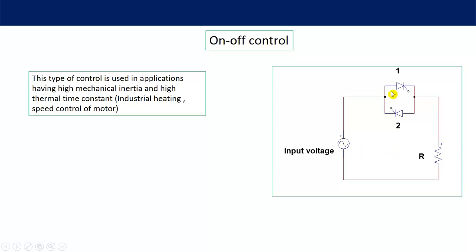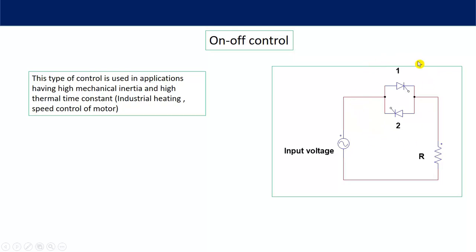Thyristor number 1 is triggered at 0 degrees, giving a complete positive half-cycle, and thyristor number 2 is triggered at 180 degrees, giving a complete negative half-cycle. So at 0°, 180°, 0°, 180° — a number of complete cycles are allowed to appear across the resistance. Then, as per requirement, the firing pulses are removed so that current and voltage through the circuit become zero. In on-off control, for some cycles the switches are on, and for some cycles the switches are off — it is not half-cycle or phase-angle control.